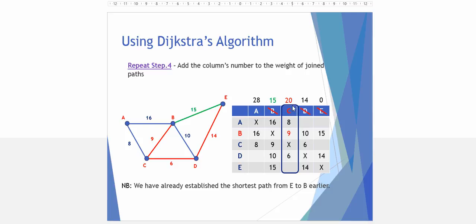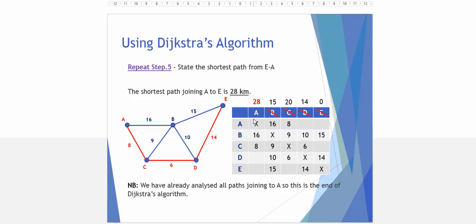We've already established an earlier pathway to get from E to B. There would be no point going E to D to C back to B, which gives us a total of 29 when we've already got there with the 15 earlier. And likewise, we've already established a shortest path from E to D. That's the end of column C. We've already examined A to B previously and A to C previously. So we're actually left with the shortest joining pathway of A to E is 28 as shown in our table. This is the end of the Dijkstra algorithm to guarantee we've found the shortest pathway.